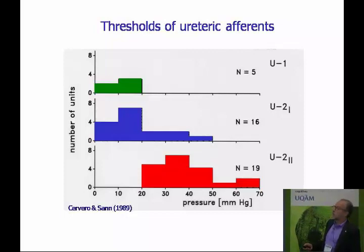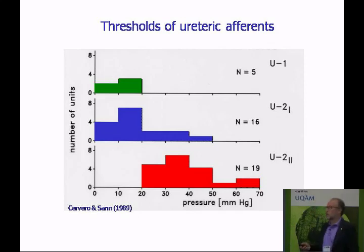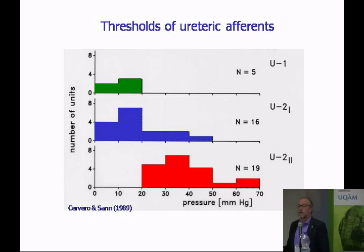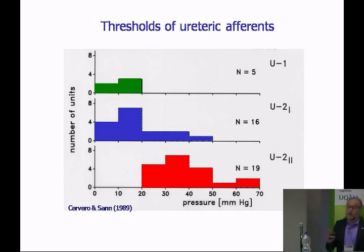Another example from the ureter: we have two types of sensors. A low-threshold group responsible for normal homeostatic functions of micturition — not related to pain — and a high-threshold group activated when people have renal colic. But if we inflame that organ, the high-threshold population develops thresholds similar to the low-threshold group, so they are now activated by the same innocuous stimuli that would normally activate the organ. As a consequence, even the normal passing of urine from the ureter becomes painful. This demonstrates considerable plasticity at the peripheral level.